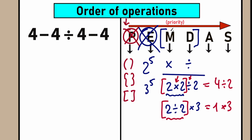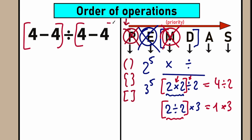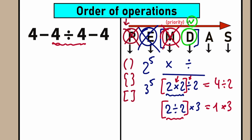Let's scan our question. We don't have a multiplication sign, so we skip that. We do have a division sign, but this division sign applies only to these two values — this 4 and this 4. We can't divide the whole left side by the right side. So our first step is to divide 4 divided by 4, which I'm underlining in green. As a result, we have: 4 minus (4 divided by 4) which is 4 minus 1, minus 4.